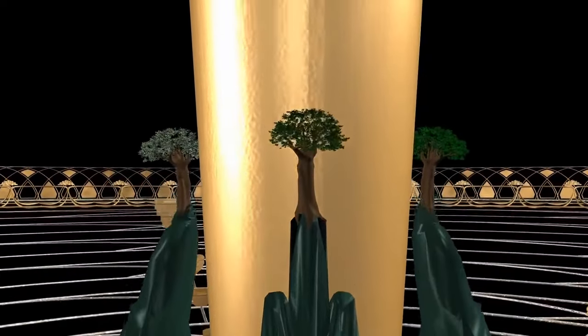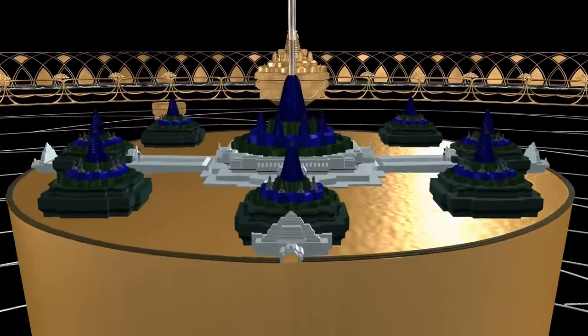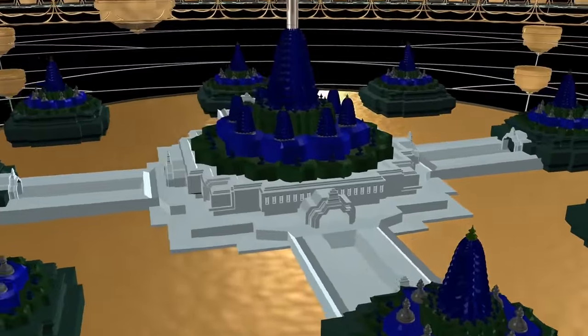In the very centre of Ilavrata Varsha is Mount Meru, a golden mountain. Atop Mount Meru are the cities of important demigods, Lord Brahma in the centre, eight Dikpalas in the cardinal directions and sub-directions.